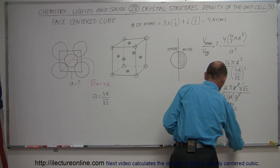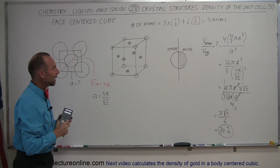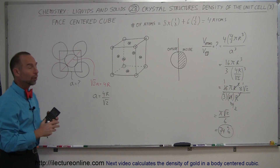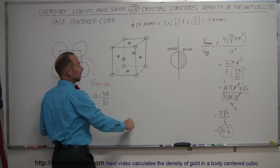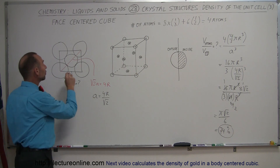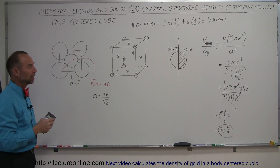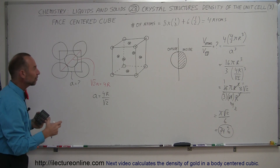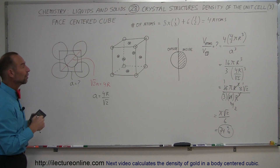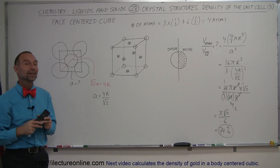That's more than before. With only corner atoms (simple cubic), the volume density was 52%. With body-centered cubic — one atom in the middle and eight at the corners — it was 68%. In the face-centered cubic case, we reach 74%, leaving about 26% as voids between atoms that can't be filled because electron shells push against each other. That's how you calculate the density of atoms in a unit cell for the face-centered cubic structure. For the body-centered and simple cubic cases, see the previous videos.